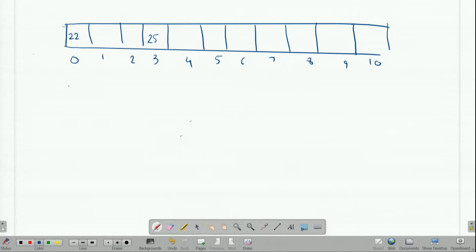So I will show you the example. This is the current hash table. In this I have two elements, 22 and 25. Suppose I want to add new element 44. Now first of all, here I am using a hash function which is just taking modulus by 11.